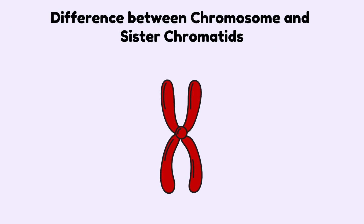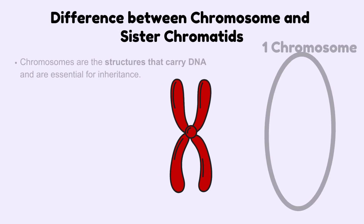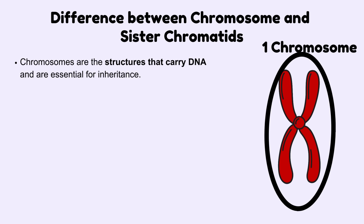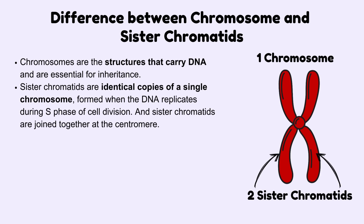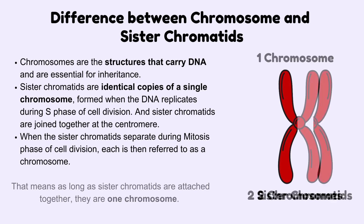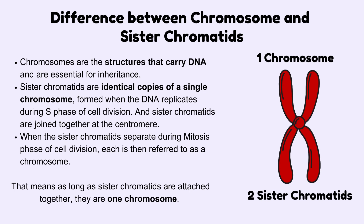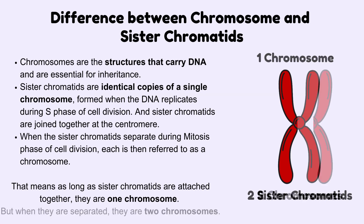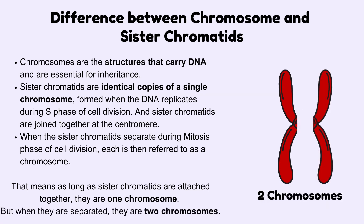What is the difference between a chromosome and sister chromatids? Chromosomes are the structures that carry DNA and are essential for inheritance. Sister chromatids are identical copies of a single chromosome, formed when the DNA replicates during the S phase. Sister chromatids are joined together at the centromere. When the sister chromatids separate during mitosis, each is then referred to as a chromosome. That means as long as sister chromatids are attached together, they are one chromosome, but when they are separated, they are two chromosomes.